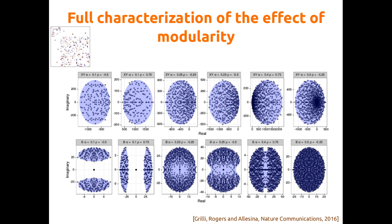Here I'm plotting two different groups with different properties — they have different sizes and interact in different ways. You get all sorts of shapes, including what I'd call Star Wars shapes.